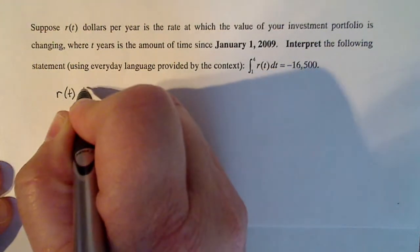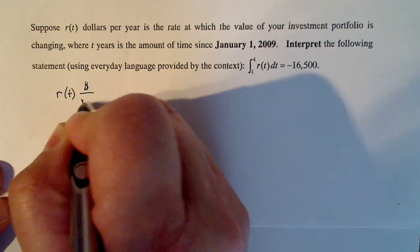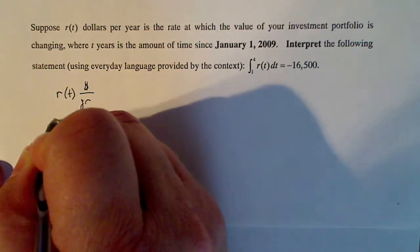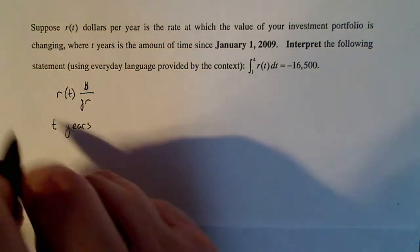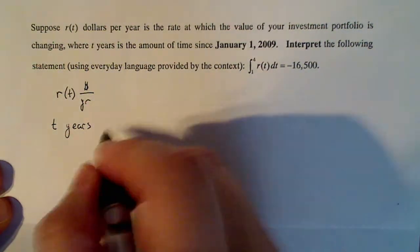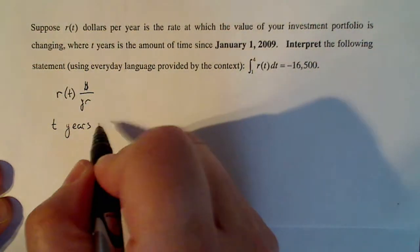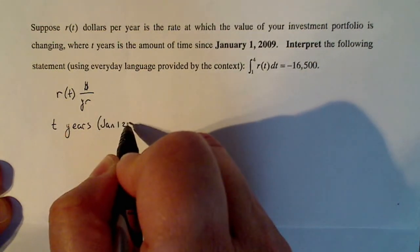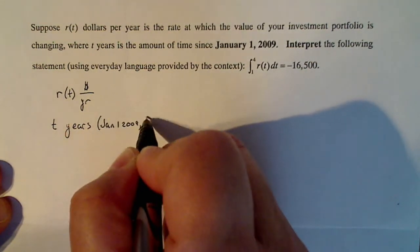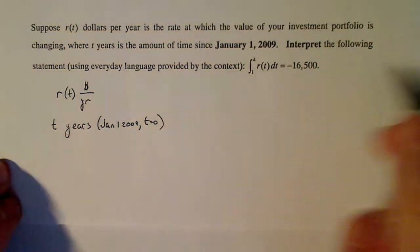So R(t) has a unit of measure of dollars per year, t is in years, and January 1st, 2009. So it's in years, the key is 2009, but everything is always starting January 1st, 2009 is where t equals zero, all very important.